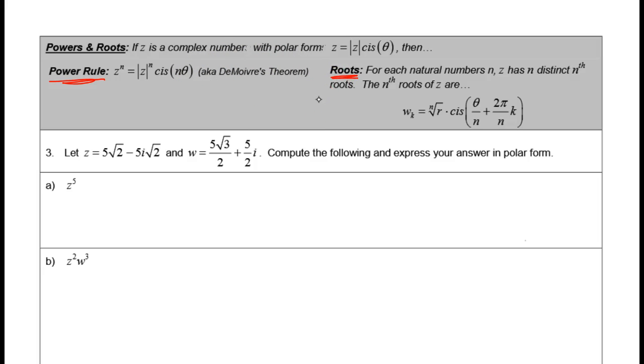Now roots are a little more complicated. For each natural number n, z has n distinct nth roots. The nth roots of z are given by this formula here. That one's going to take us a little time to work through. So I'm going to try and go a little quicker through the power stuff, and then we'll slow it down for the roots.